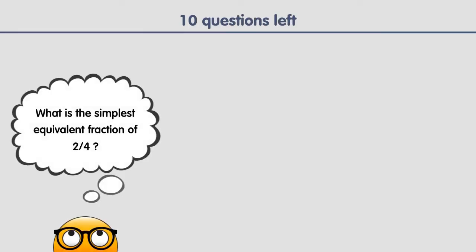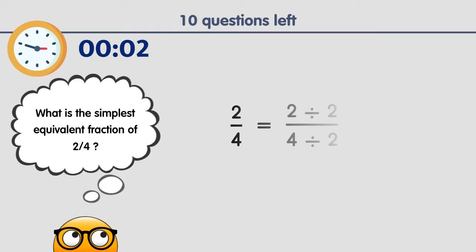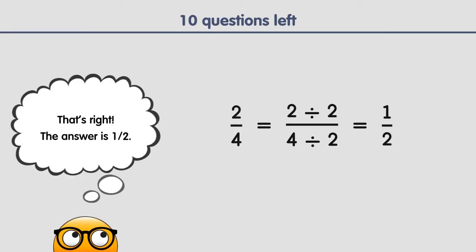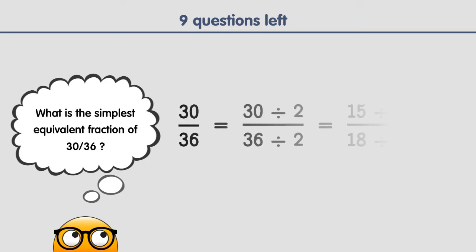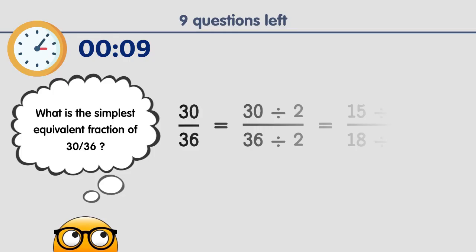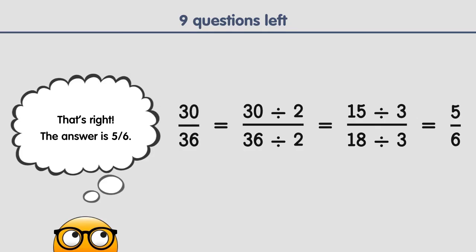What is the simplest equivalent fraction of 2 fourths? The answer is a half. What is the simplest equivalent fraction of 3 thirds? The answer is 5 sixths. What is the simplest equivalent fraction of 5 sixths? That's correct. The answer is 5 sixths.